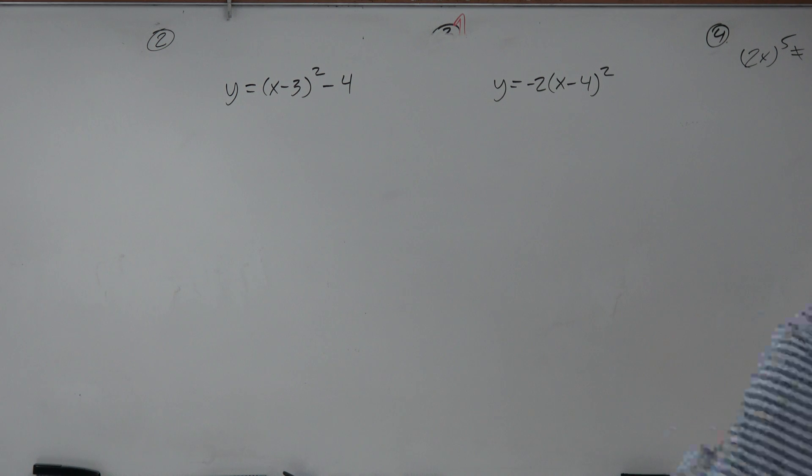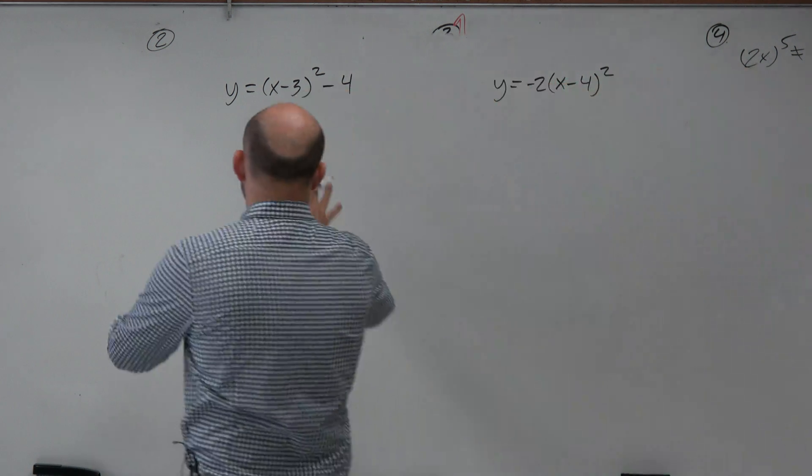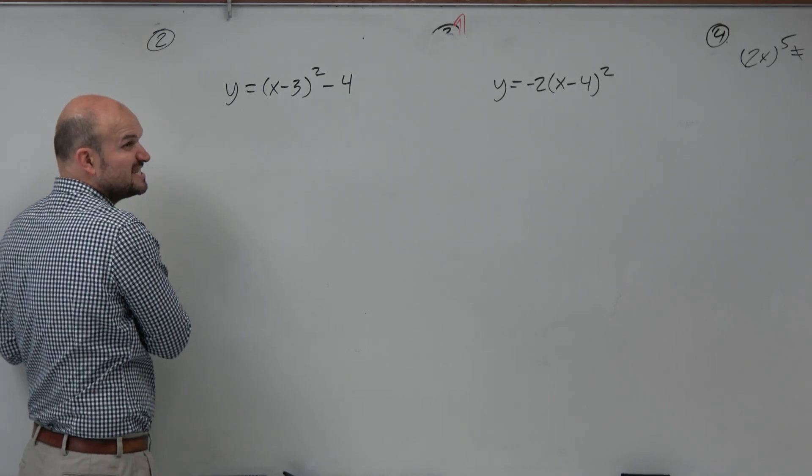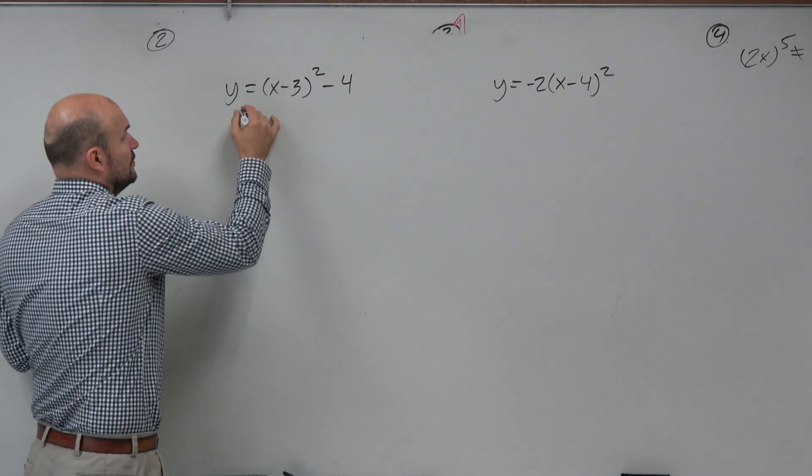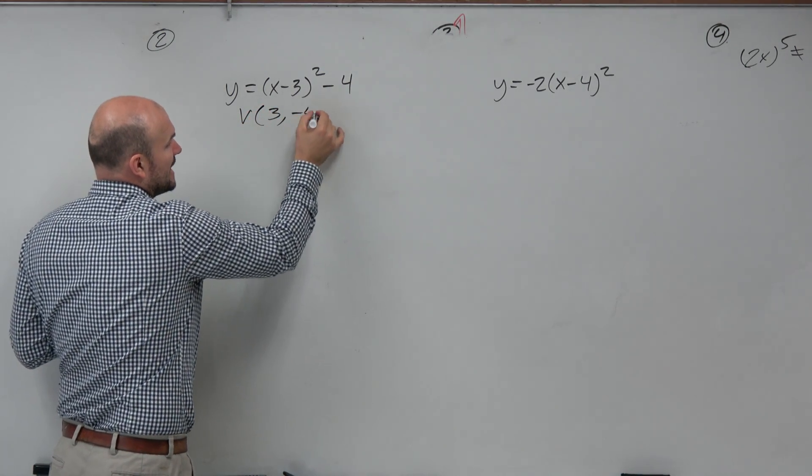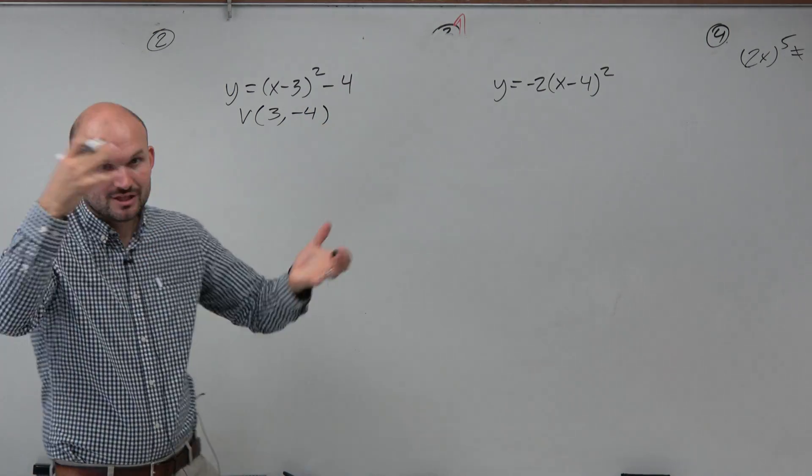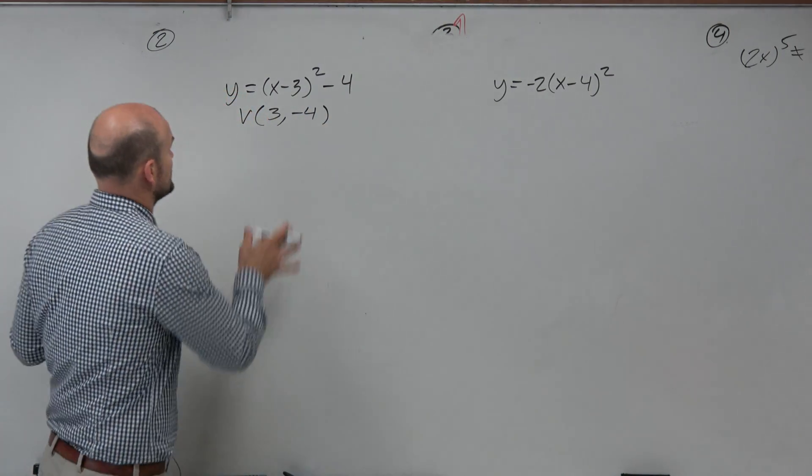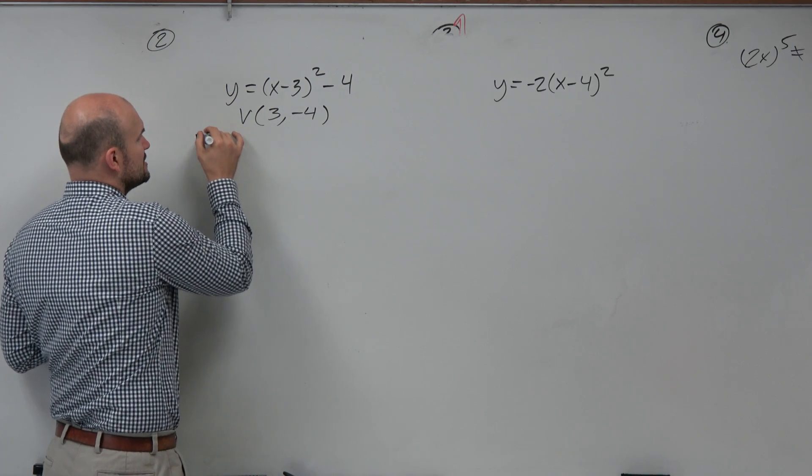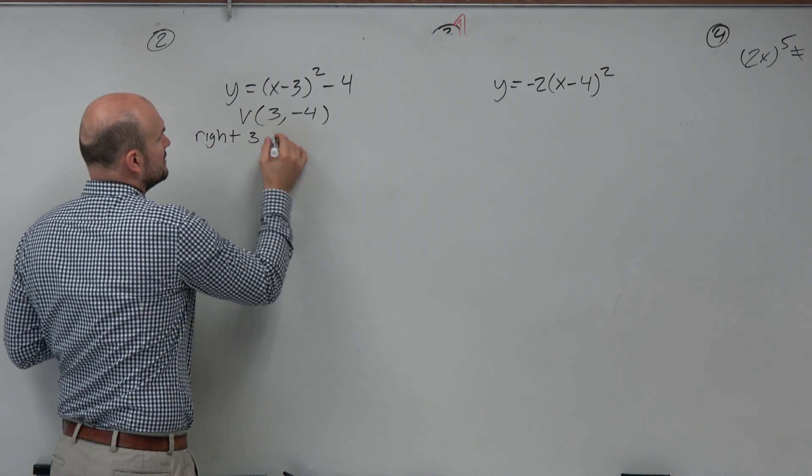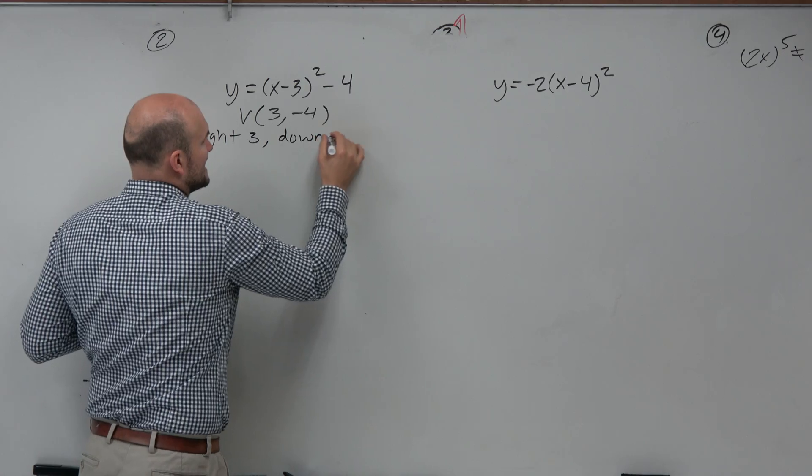So let's get the basics out of the way. The first thing you can like about vertex form is it's very easy to find the vertex. The vertex is (3, -4). Remember the h and k? And that's also nice because we can say the transformations are going to be right 3, down 4.